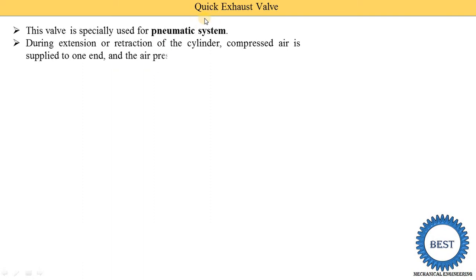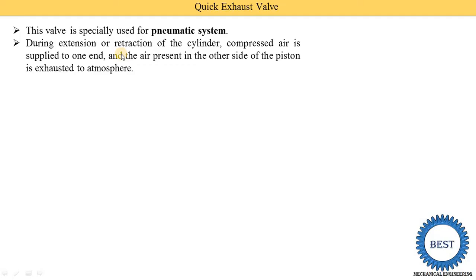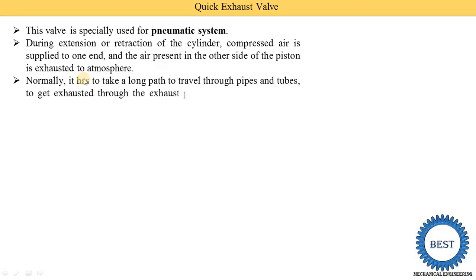The quick exhaust valve is used for the quick removal of air. During extension or retraction of a cylinder, compressed air is supplied to one end. During extension stroke, compressed air is supplied to the cap end side, and at the same time on the rod side the air is exhausted to the atmosphere. Normally the air has to travel a long path through pipes and tubes to get exhausted through the exhaust port of the directional control valve.